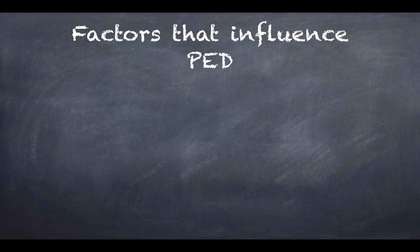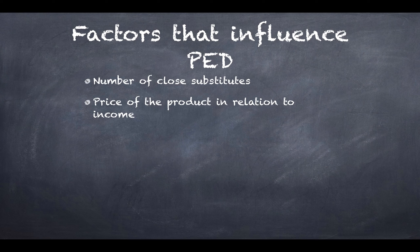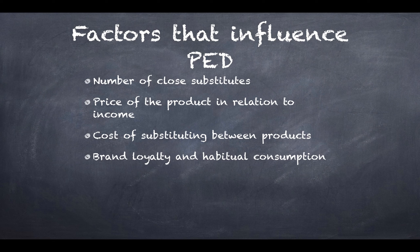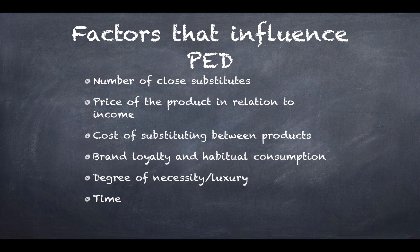When we consider the factors that influence demand, there are six you should be familiar with. The first is the number of close substitutes, and we're going to go through each of these in turn: the price of the product in relation to income, the cost of substituting between products, brand loyalty and habitual consumption, the degree of necessity and luxury, and finally we'll close with time.